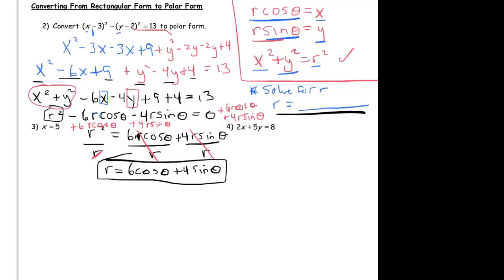Alright, so again it's this whole game of turning x squareds plus y squared into r squares, and x's and y's into r cosine thetas and r sine thetas. So let's do these next two actually much more quickly than we did that one. Here's x equals 5, so I can replace my x if I want to turn this into polar form with my r cosine theta. So I get r cosine theta is equal to 5.